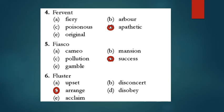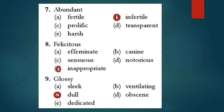Fluster means to make something very confusing, so disarrange. So arrange will be the opposite of fluster. Abundant means abundance, plenty, ample, fertile. So the opposite of that will be infertile. Prolific also means large in plenty. Felicitous means very apt, very suitable, very appropriate, so the opposite will be inappropriate. Effeminate means womanish, canine is related to dog, notorious means infamous.